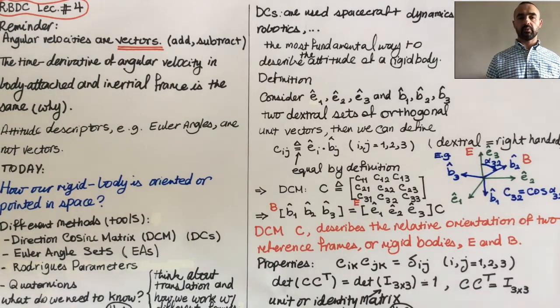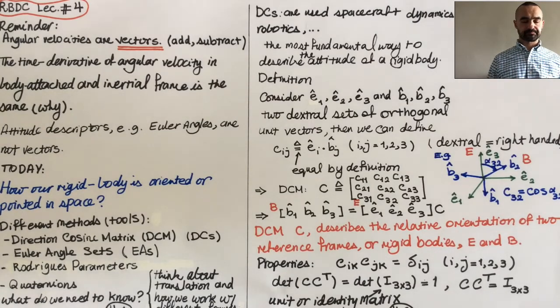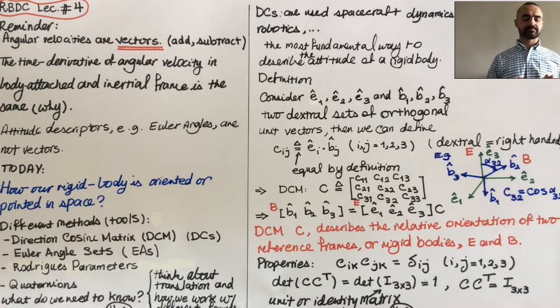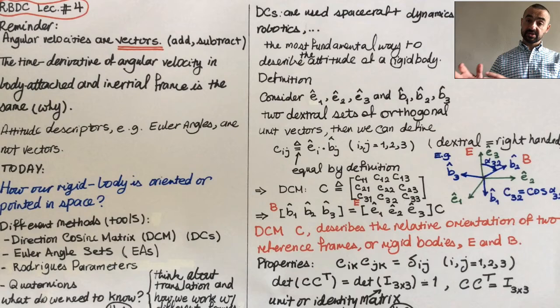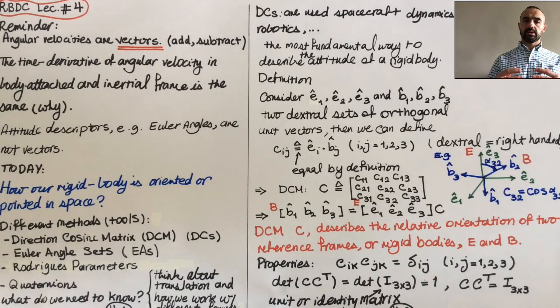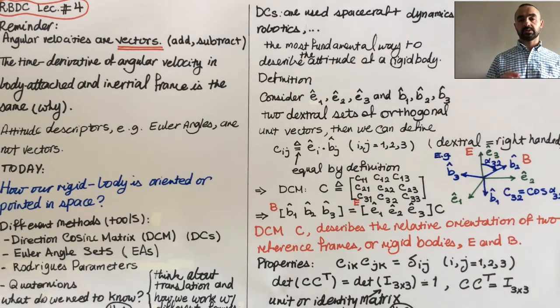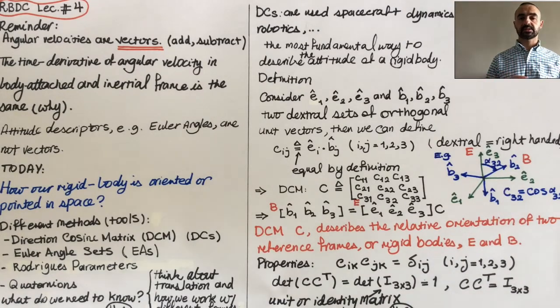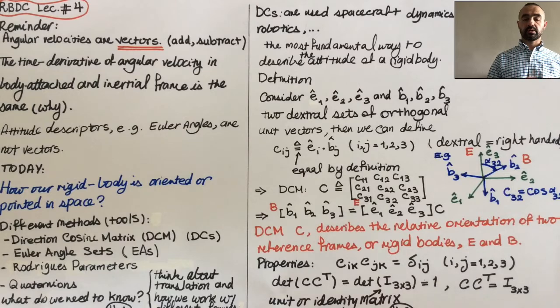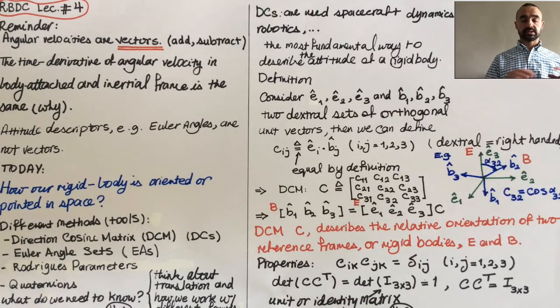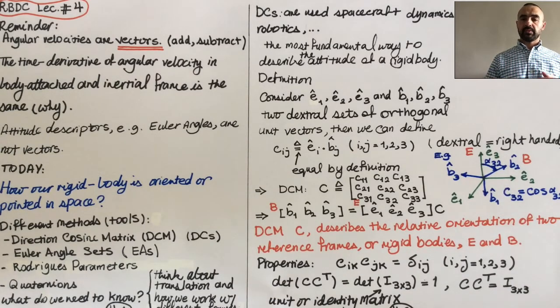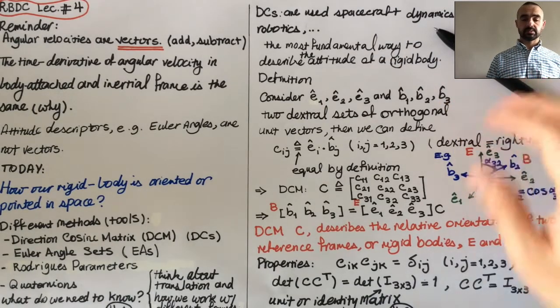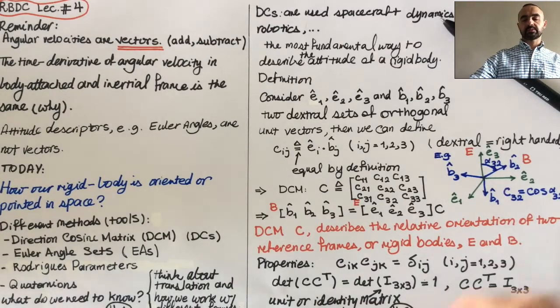We start with direction cosine matrix. If you think about translation for example, we have different frames that we work with, and we start with Cartesian frame because it is easier to imagine how Cartesian frame works, how we locate objects in a Cartesian frame, which is just a distance to three orthogonal axes. Here it's almost the same thing. This is how I would describe direction cosine matrix. It is the easiest to imagine and therefore it is the most fundamental way we describe attitude.